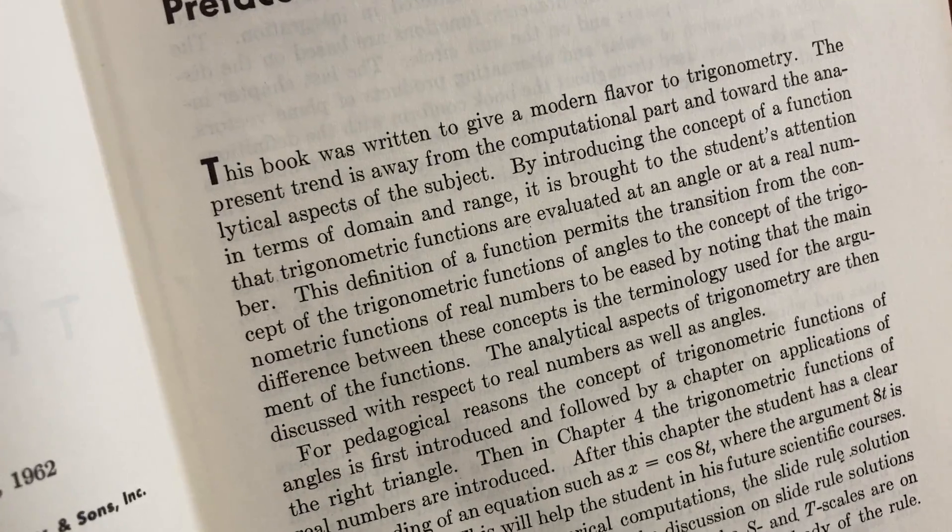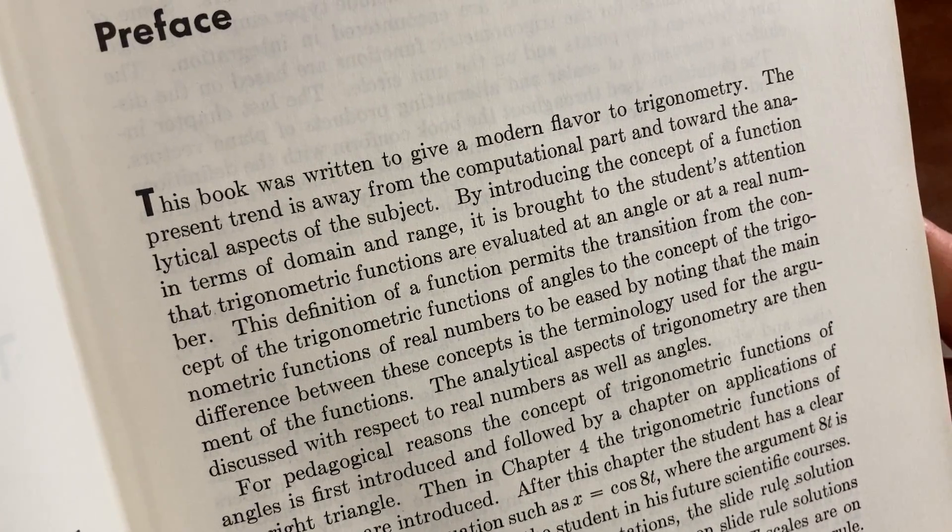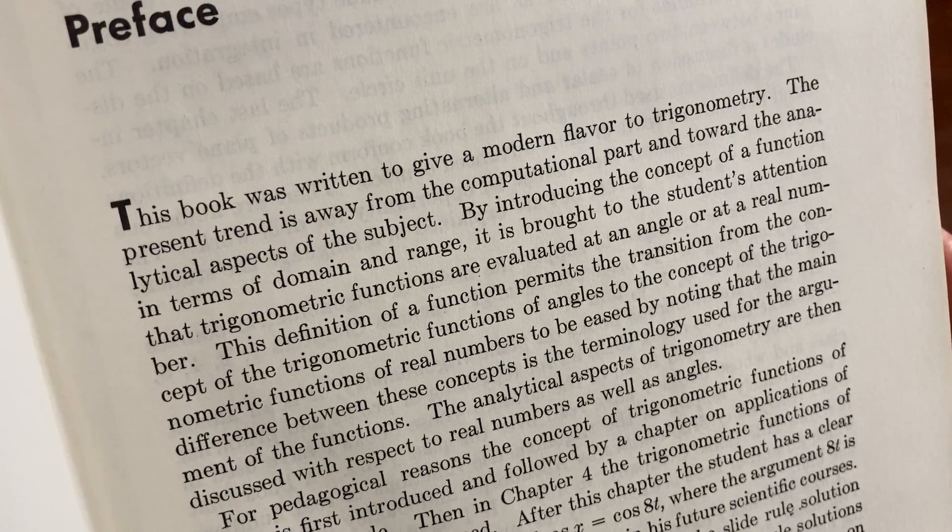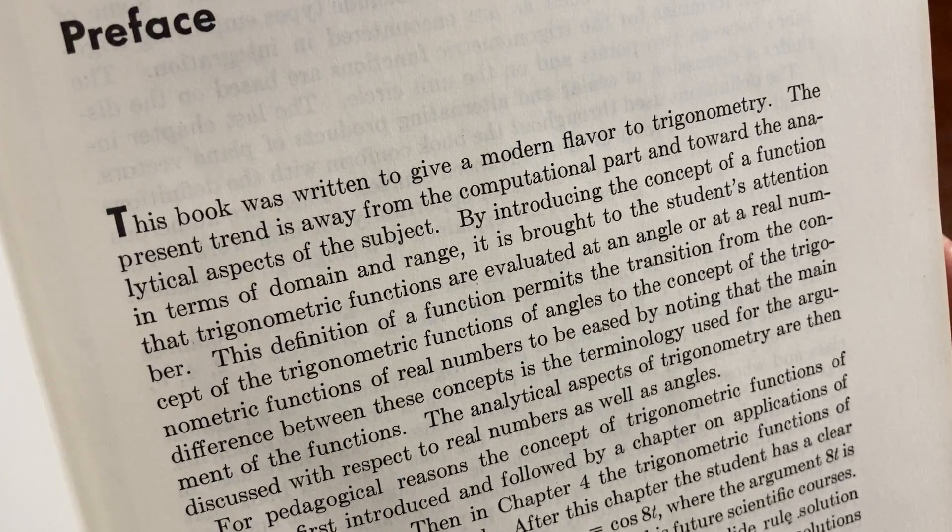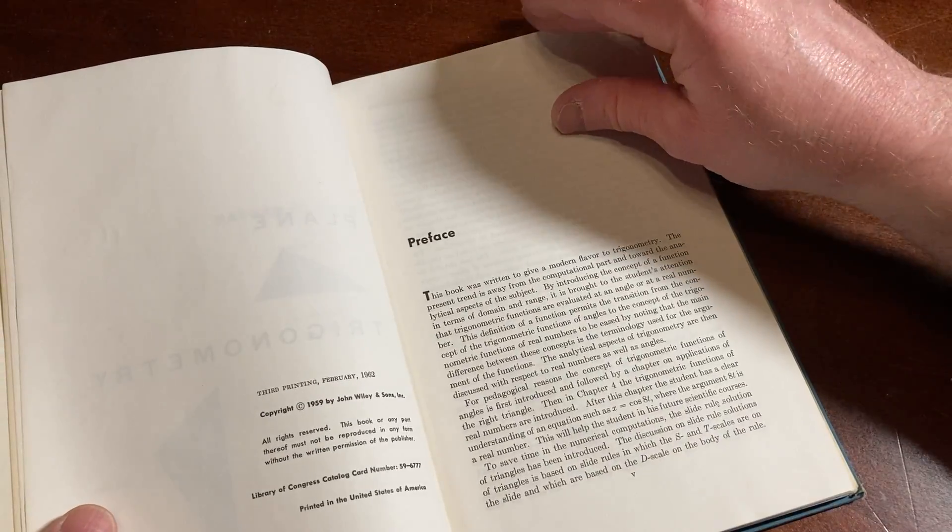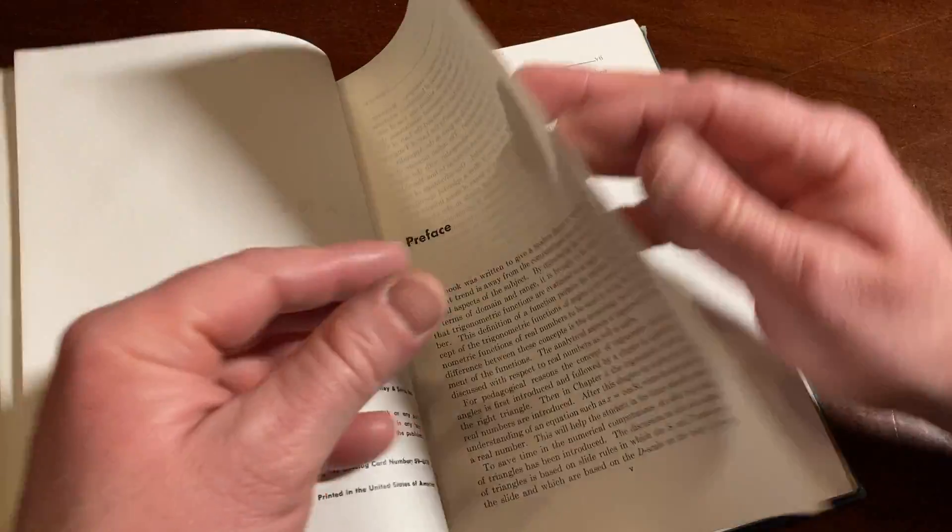This book was written to give a modern flavor to trigonometry. The present trend is away from the computational part and toward the analytical aspects of the subject. Let's check it out. See what's in this book. So originally published in 1959.